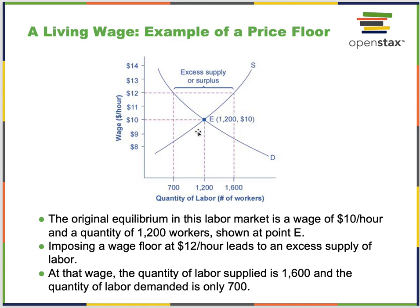If the equilibrium is $10 an hour and 1,200 people work at that wage, setting a minimum wage of $12 creates an imbalance: the demand for workers drops to 700 while the number of workers willing to work at $12 rises to 1,600. This creates an excess supply of people looking for work — an imposition of a wage floor feeds an excess supply of labor at that wage.